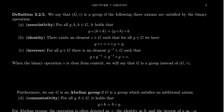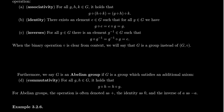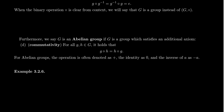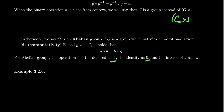Associativity, the identity, and inverses together form the axioms of group theory. Additionally, if the operation satisfies commutativity — G composed with H equals H composed with G for any two elements — we call this a commutative operation, and a group with this property is called an abelian group. For general groups, we often use multiplicative notation. For abelian groups, we often denote the operation with a plus sign, the identity as zero, and inverses as negative A instead of A-inverse.